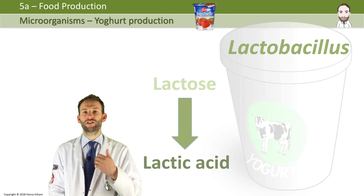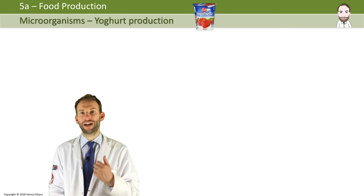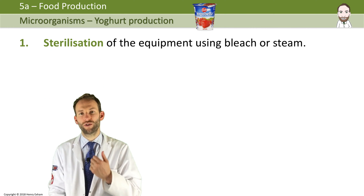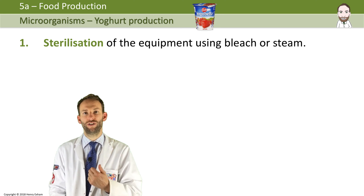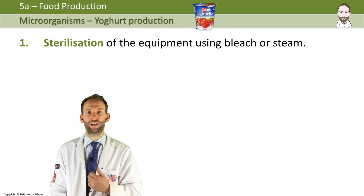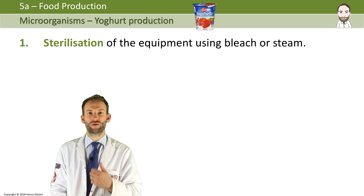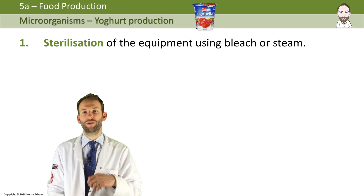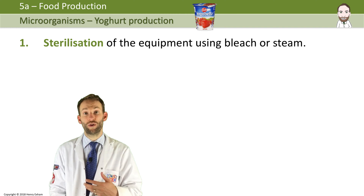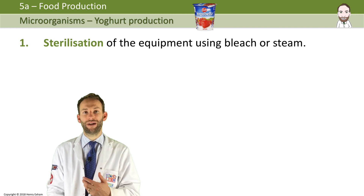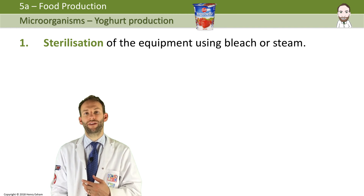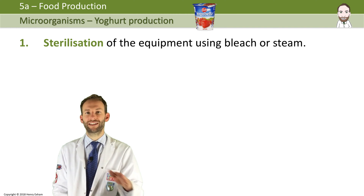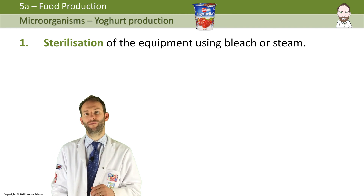First, you've got sterilization. It's very important that you sterilize all the equipment you're going to use to make yogurt with bleach or steam, because the last thing you want to do is breed unwanted harmful bacteria. So you make sure everything is sterile first.